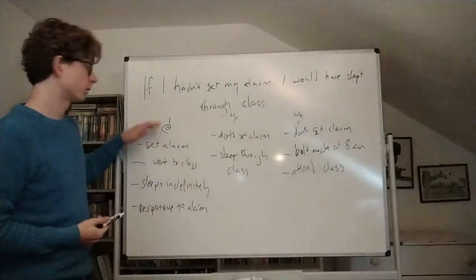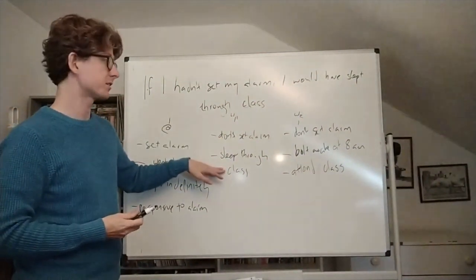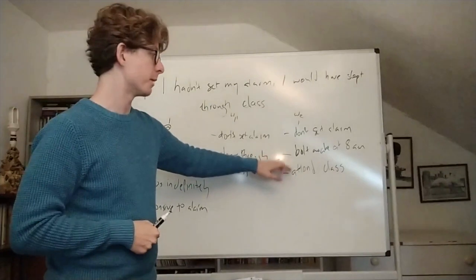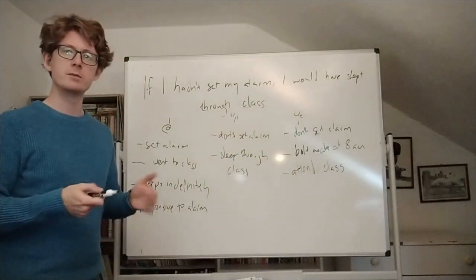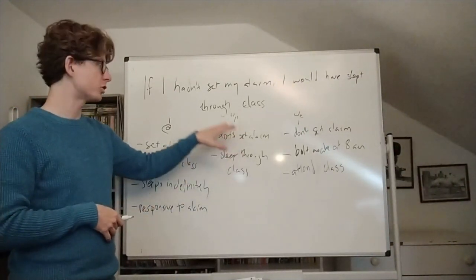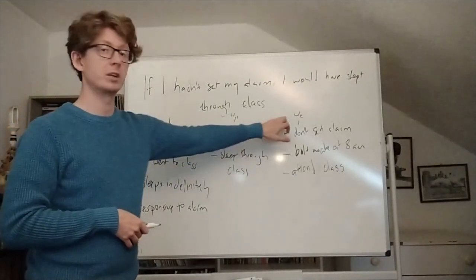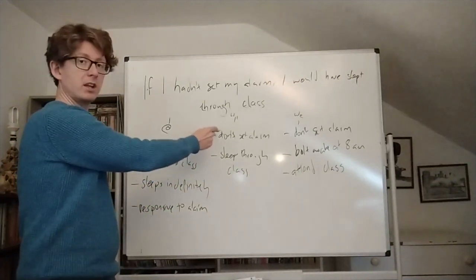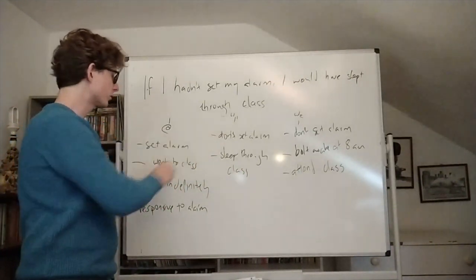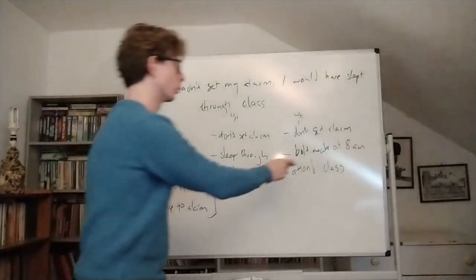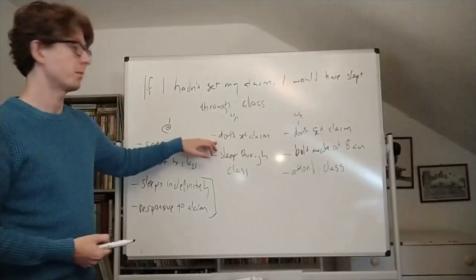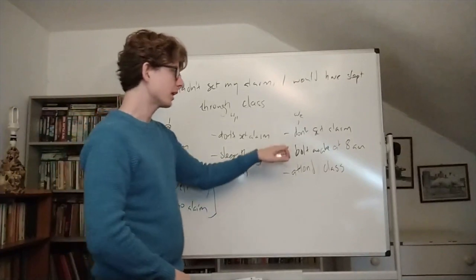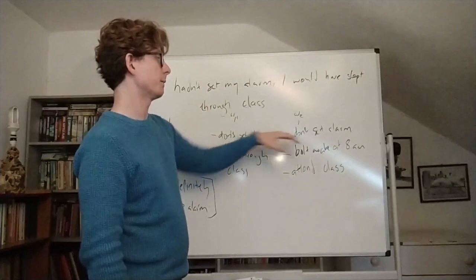So here we have three possible worlds: the actual world; world one, where I don't set my alarm and sleep through class; and world two, where I don't set my alarm but nonetheless sit bolt awake at 8am and attend class. What I want you to observe is that there seems to be some relevant sense in which world one is more similar to the actual world than world two. World one, even though it disagrees about whether I set my alarm, seems to respect the important background facts in a way that world two doesn't — because in world one, since I don't set my alarm, I sleep through class, which is the kind of person I am.